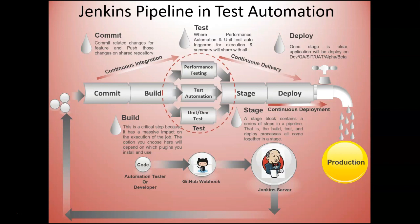Upon successful builds, the team automatically deploys to a continuous environment where all developers can view the build. When the client is happy, one manual button click sends it to the production environment. However, continuous integration and continuous delivery alone are still not enough — we also need continuous testing, where testers and automation testers come into the picture. Continuous testing takes the CI/CD philosophy and shifts it to the left. The key aim of continuous testing is to bridge the gap between developers and testers.